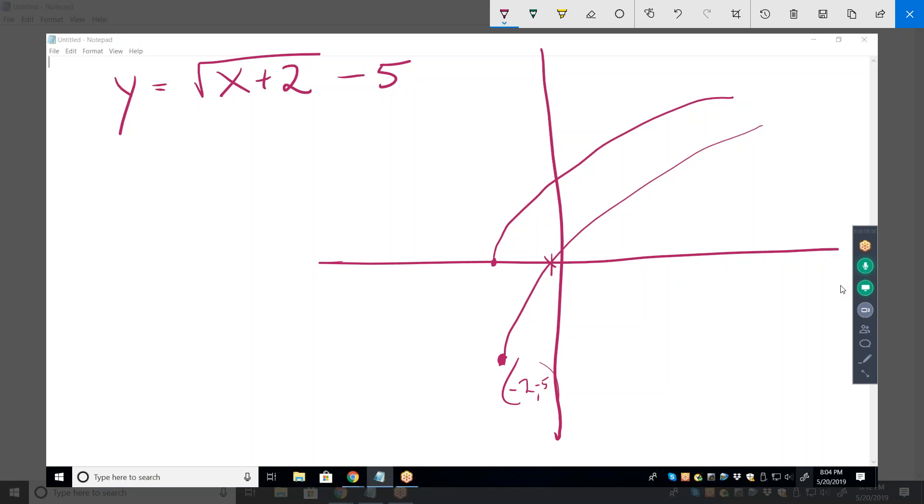Wouldn't you just plug in a 0 for y? Correct. Solve that. All right, so, all right. So it would be, you add 5. And then it would be 5 equals 3x plus 2. Then square both sides, so it would be 25 equals x plus 2. And then minus the 2, so 23.